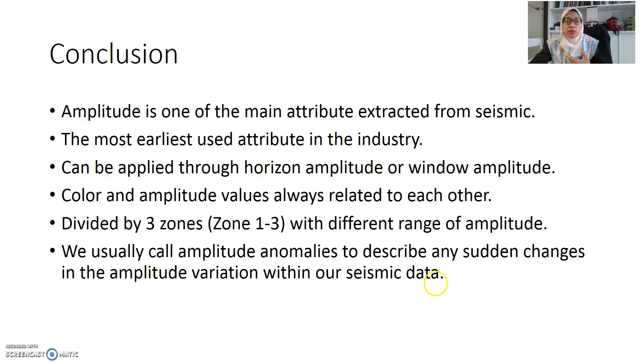So in conclusion, for amplitude attributes exercise that you're going to do in the class later on, you have to bear in mind that amplitude is the most common and main attribute to be extracted from seismic. You can have lots of types for amplitude attributes and you can see in your portrayal later on. It is the most earliest used attribute. It can be applied through horizon amplitude or windowed amplitude either by two horizons or two times. The color and amplitude sometimes related to each other. It is divided by three zones, zone 1 to 3 with different range of amplitude and it is represented by the zone amplitude graph.